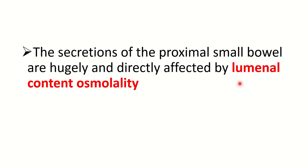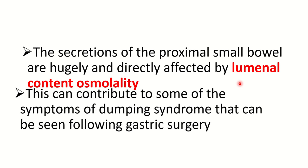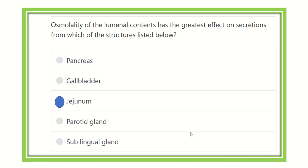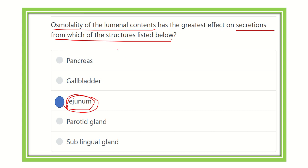The secretion of the proximal small bowel is hugely and directly affected by luminal content osmolarity, which is the end product of food material. This can contribute to some of the symptoms of dumping syndrome seen following gastric surgery. So our answer is the jejunum — its lumen is wider and contains foreign substances like food, which cause secretion from the gut wall.